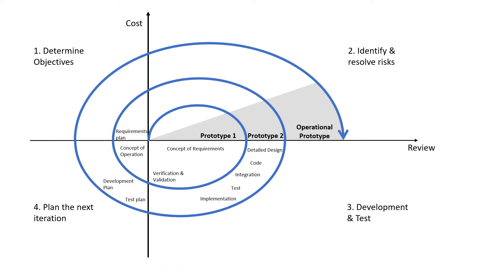The spiral model basically consists of four phases. The first phase is to determine the objectives. This is the planning phase in which stakeholders, requirements, and win conditions are identified and defined.